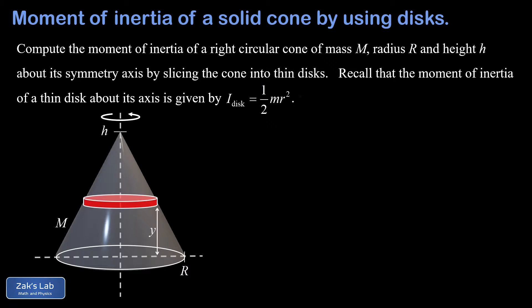We'll start by labeling the dimensions of this disk. We call the vertical location of the disk y, and we're slicing the cone into disks as y goes from zero — the bottom of the cone where the disks are widest — all the way to h at the top where the disks get really small. The radius of those disks decreases as y increases, and we'll call that radius x. The thickness of an individual disk is the infinitesimal increment dy.